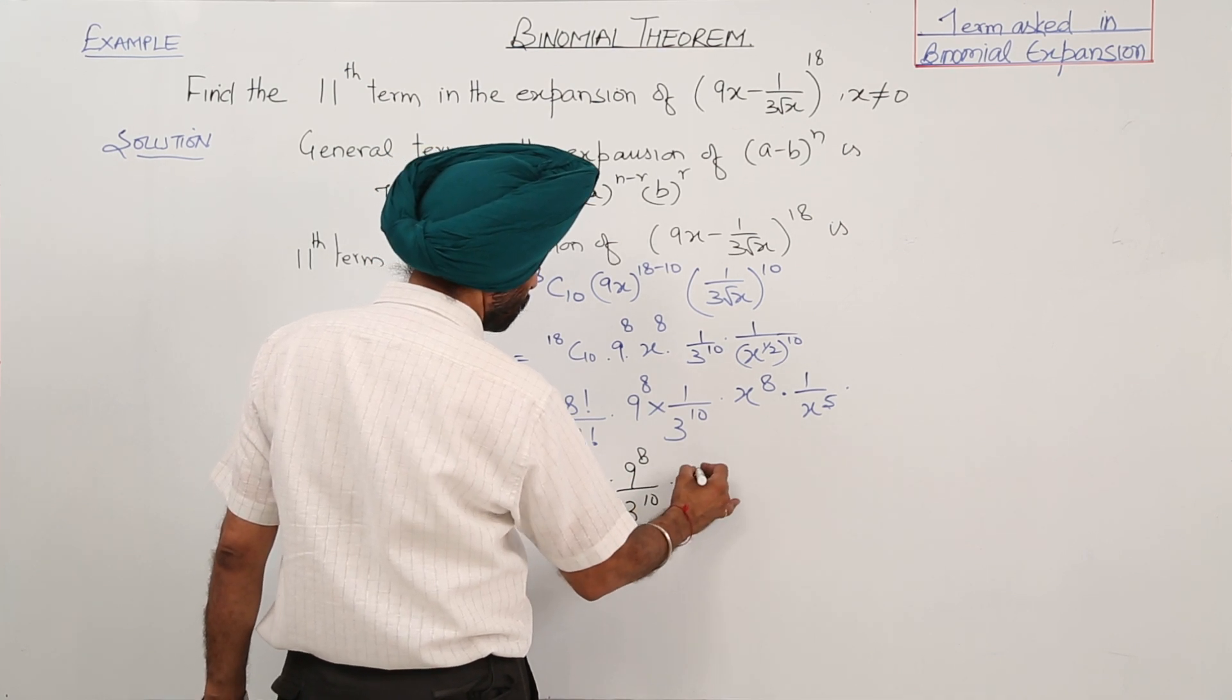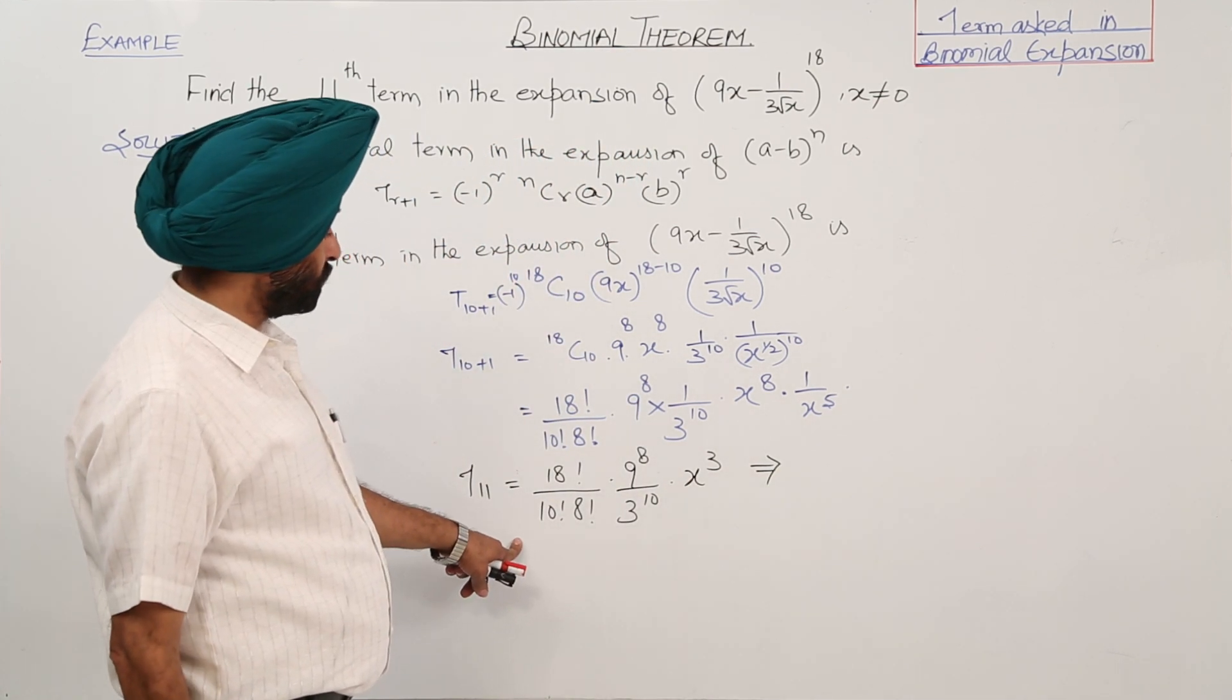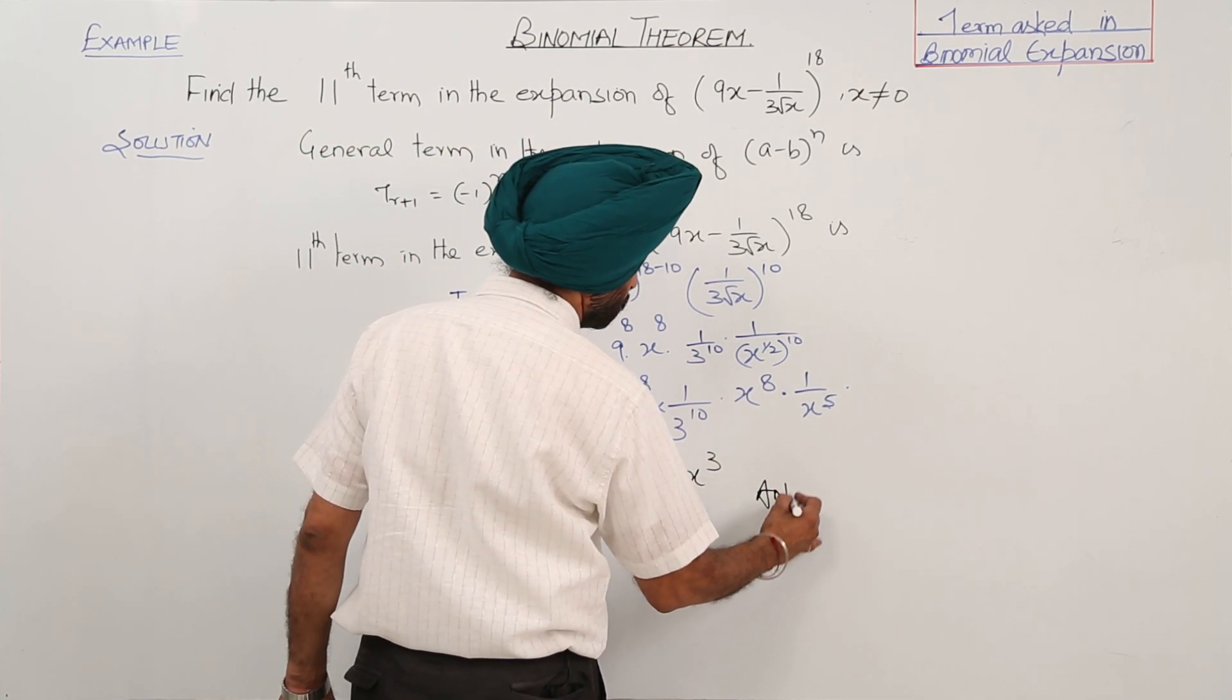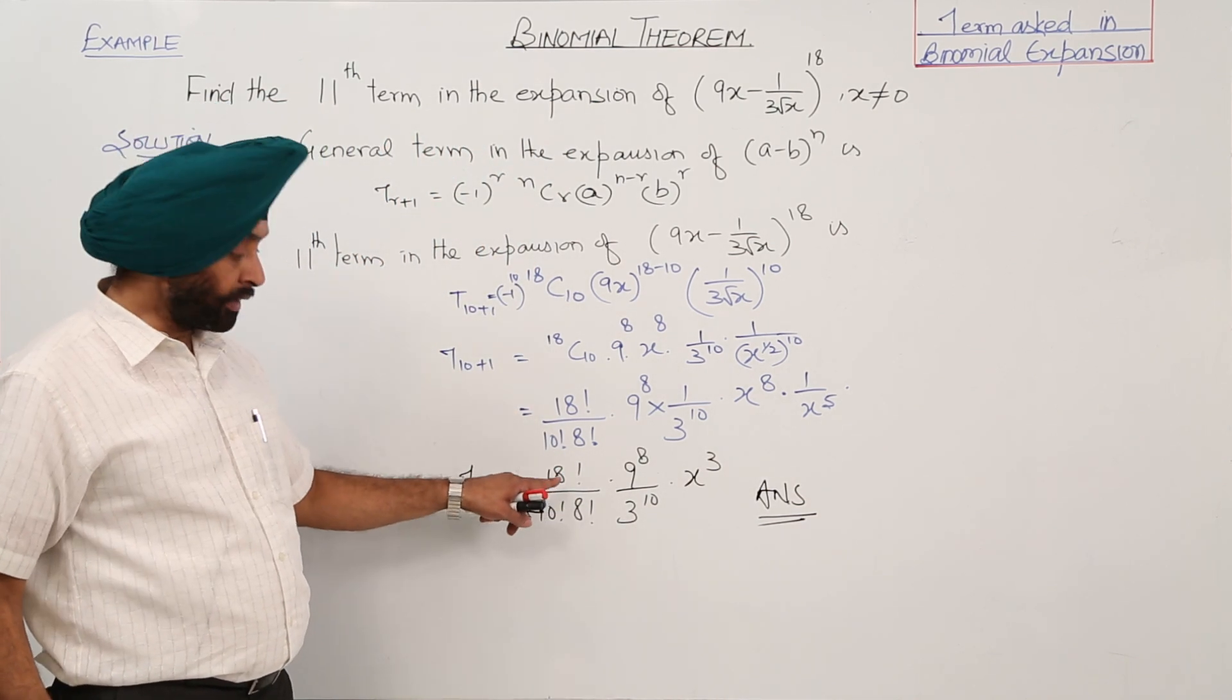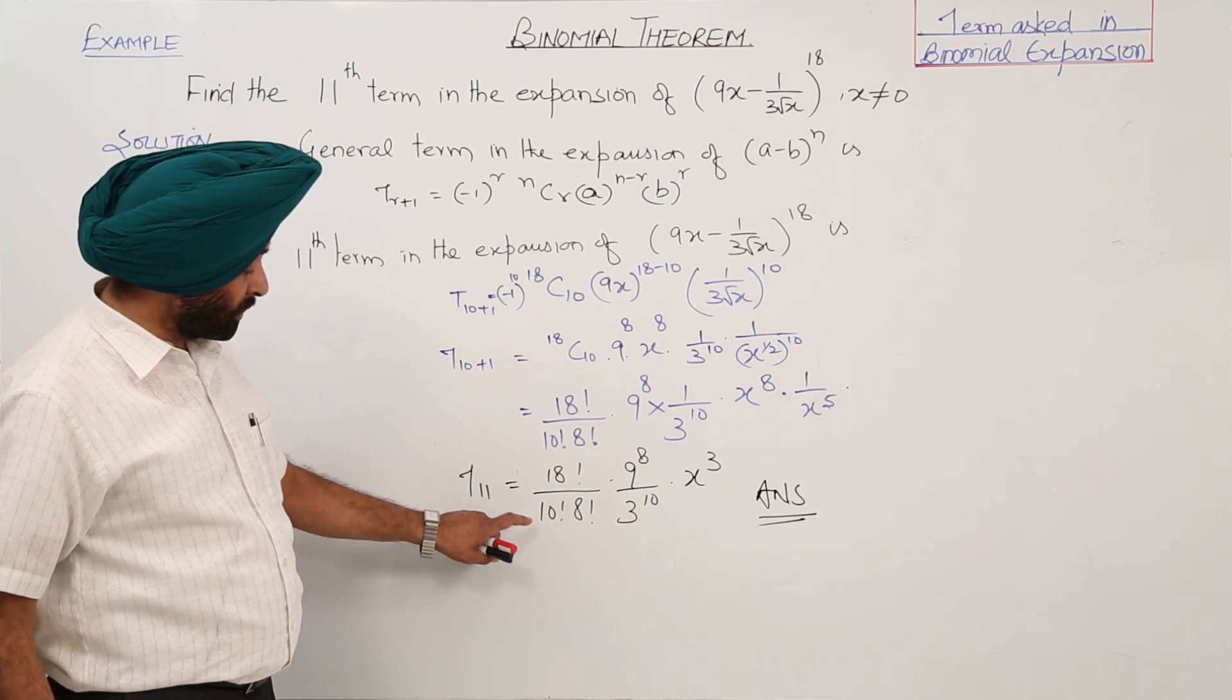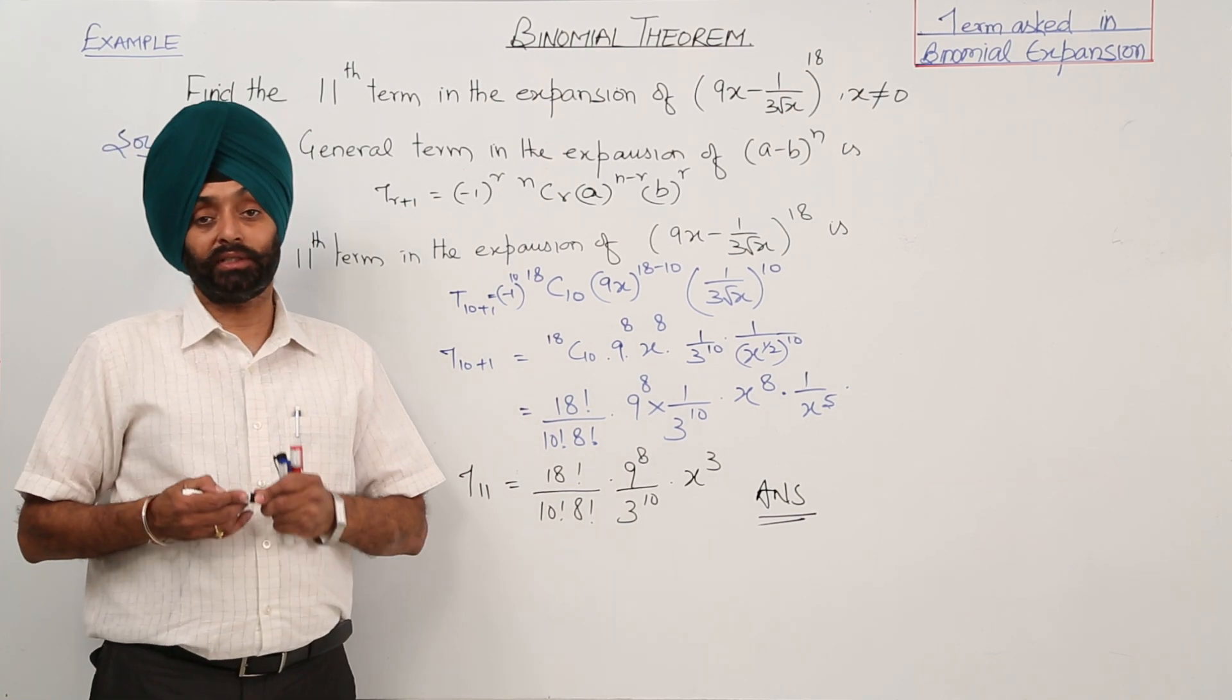18 factorial upon 10 factorial, you can just solve it and this will be your answer. If the answer is in large figures, then drop there only, but solving this part is not difficult. 18 factorial upon 10 factorial 8 factorial will be 18 times 17 times 13, nothing more. So this is the answer.